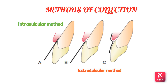The intrasulcular method was given by Brill, whereas the extrasulcular method was given by Löe and Holm-Pedersen. Since the intrasulcular method places the strip into the gingival sulcus, it produces some irritation which can trigger fluid flow. To minimize this irritation, Löe and Holm-Pedersen developed the extrasulcular method, placing the paper strip at or over the pocket entrance.